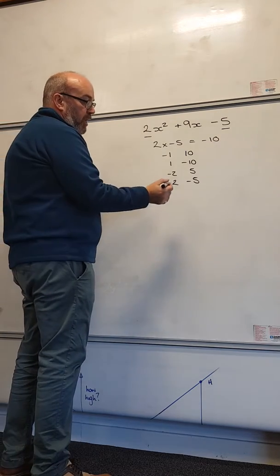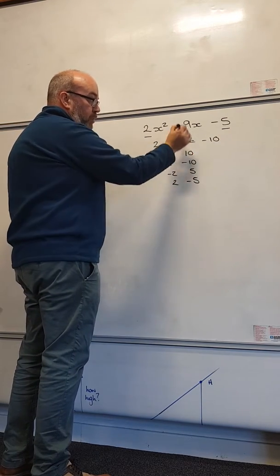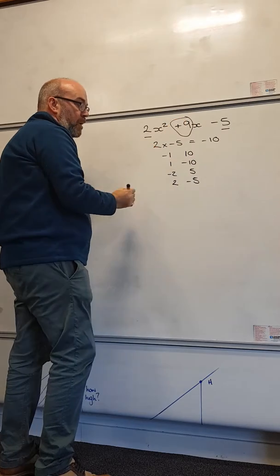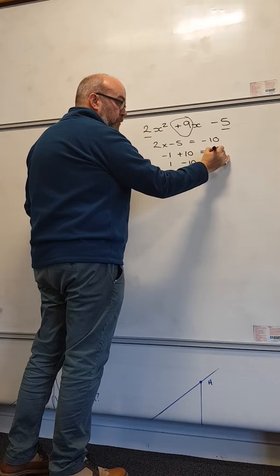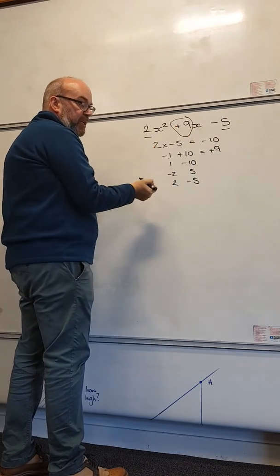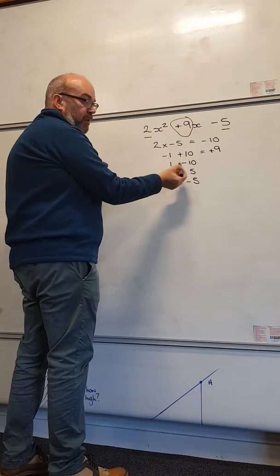What I'm going to do now is have a look to see which of these total the number in the middle here. So I've got minus 1 plus 10 gives me plus 9. Had it been a negative 9 in the middle, then it would have been the other pairing here.